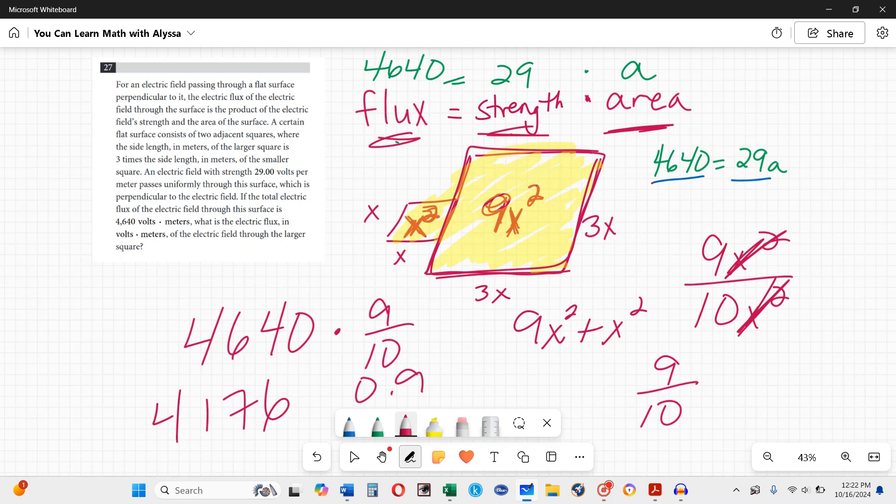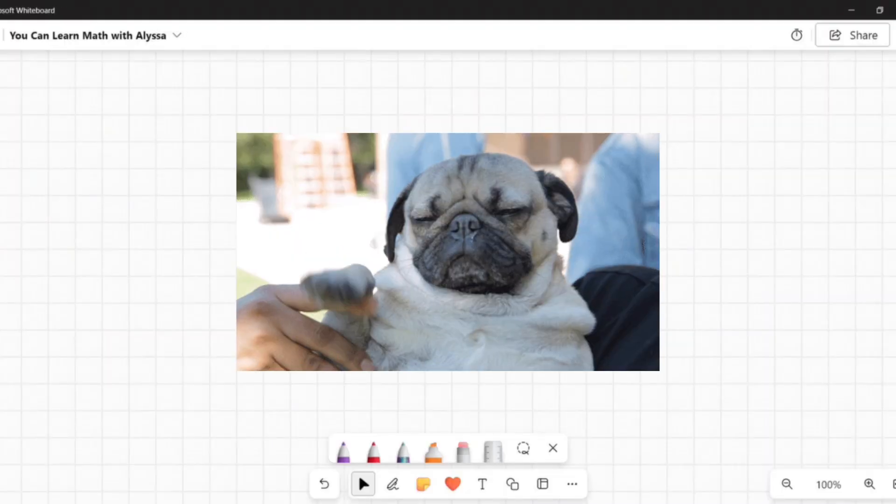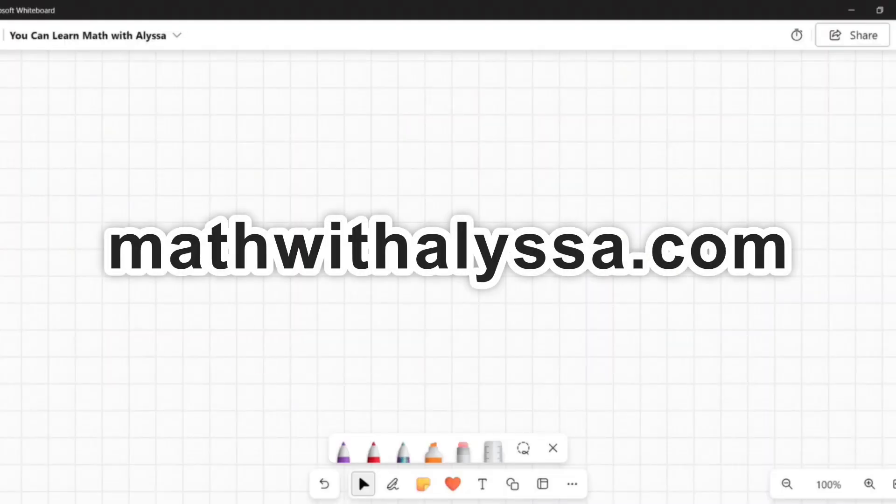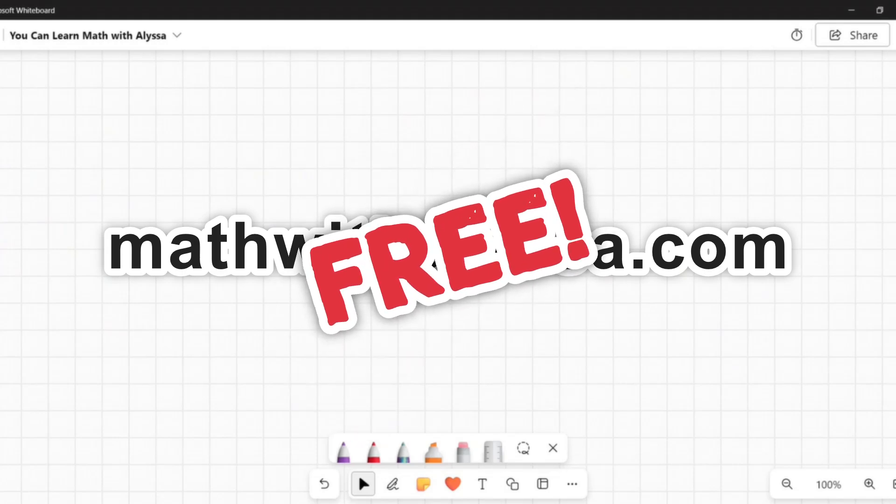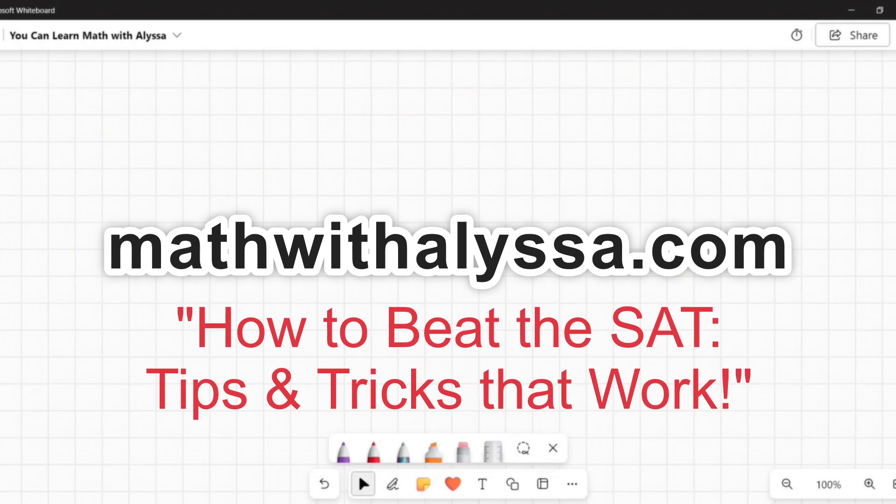If that made sense to you, that's a nice little shortcut way you can do this. Either way you're going to get to the correct answer of 4176. Congratulations, you've completed this section. Hey guys, head over to my new site mathwithalyssa.com to get your free, yes free, 10 video course of SAT tips and tricks.